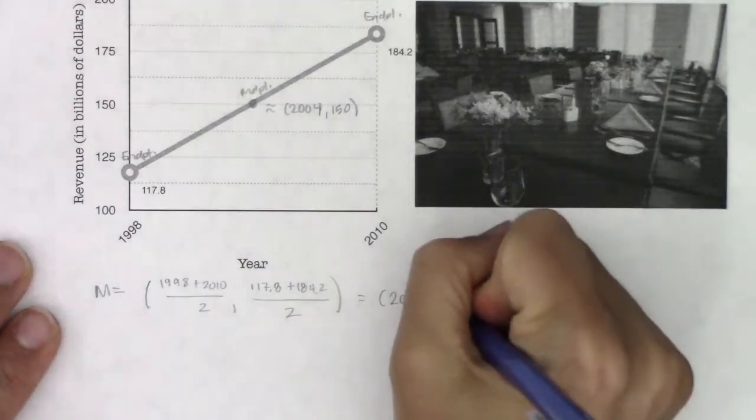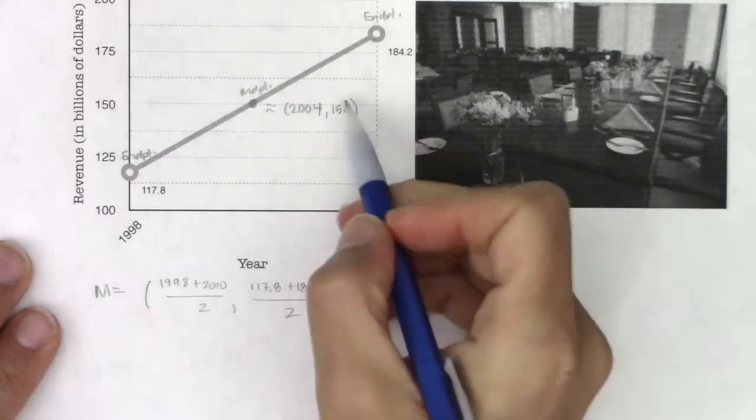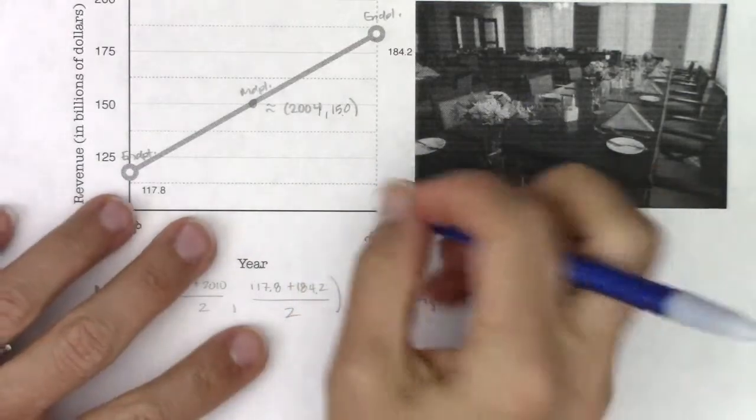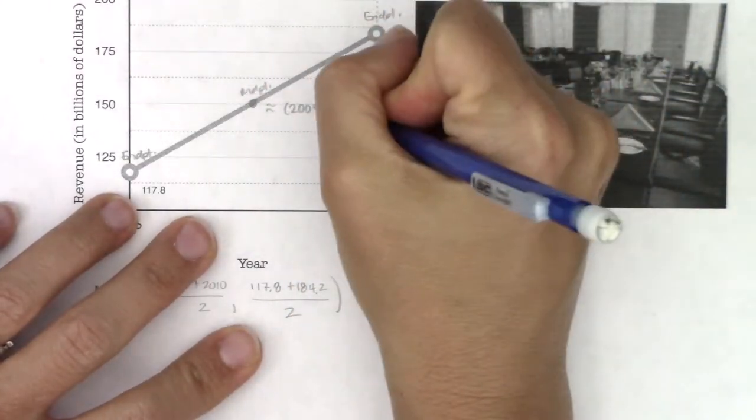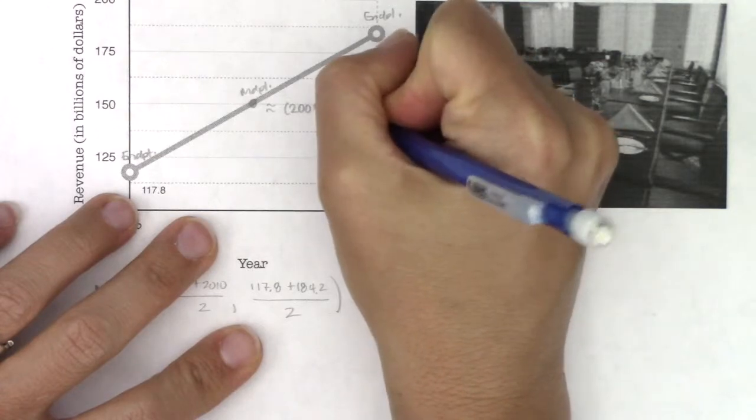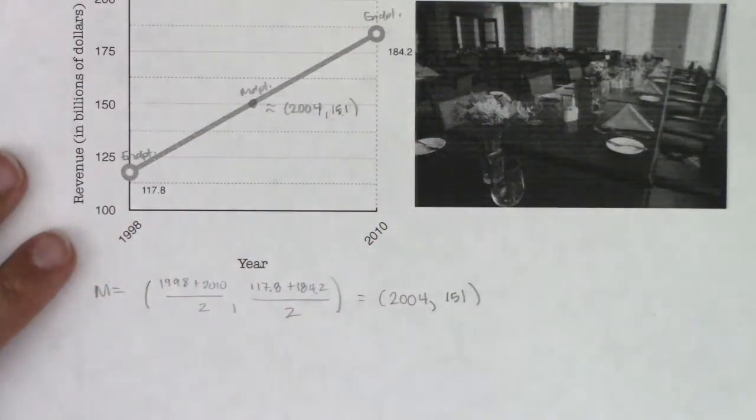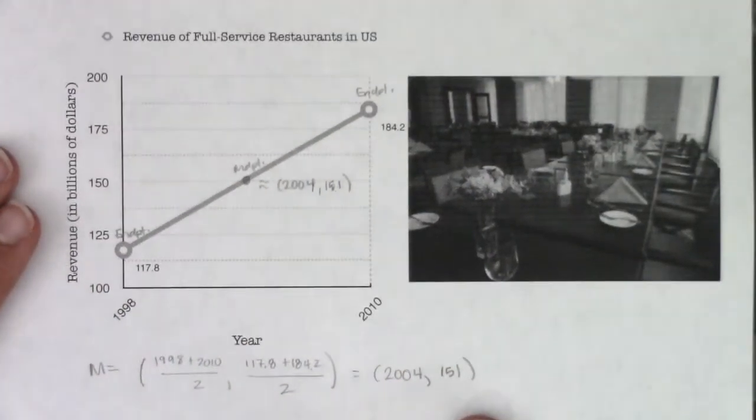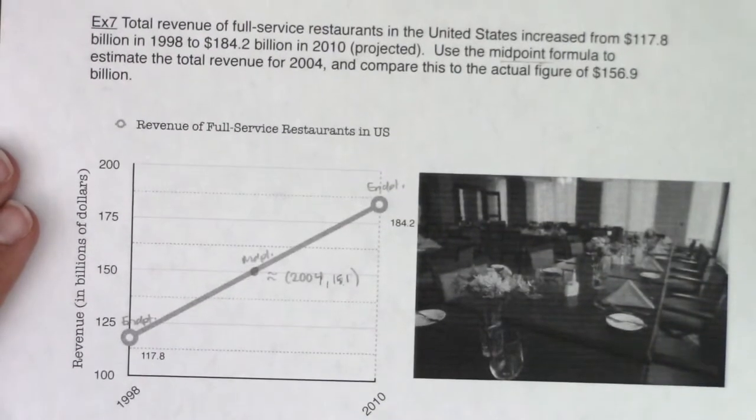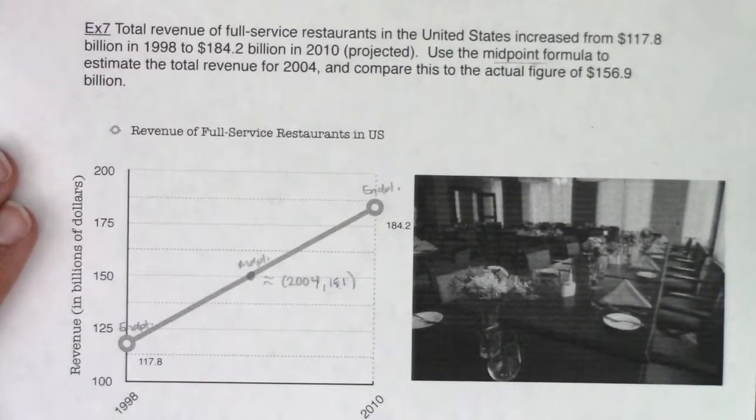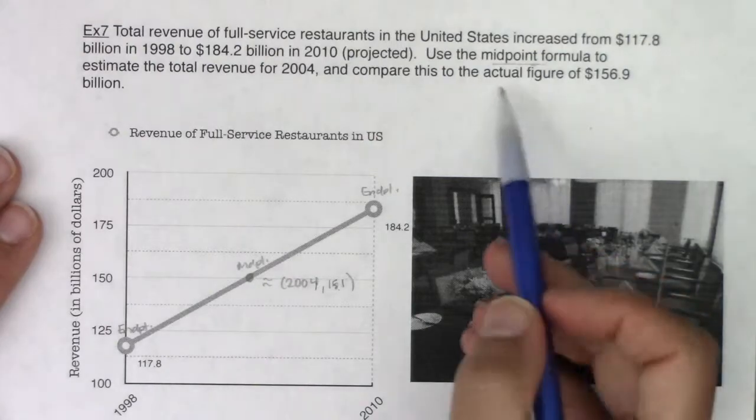So I was close, but not quite. I guessed 150, so this is technically 151, but I am happy with my guess. Now I'm going to move this back down so we can remember what the directions actually said. So we did find the midpoint, but it said compare this figure to the actual figure of 156.9.